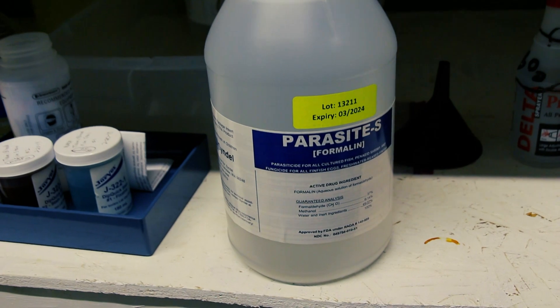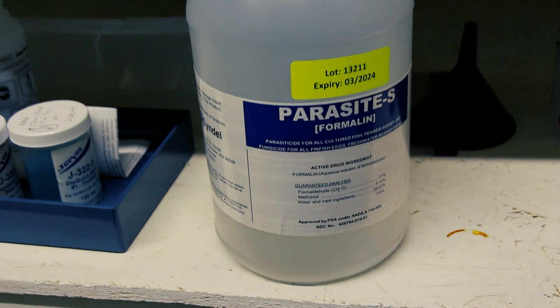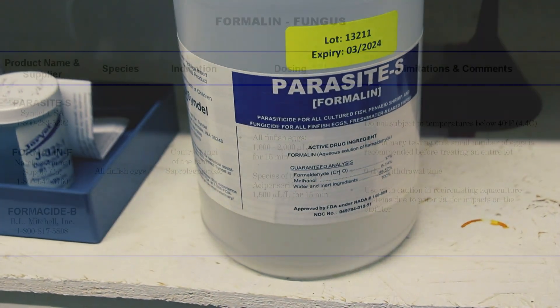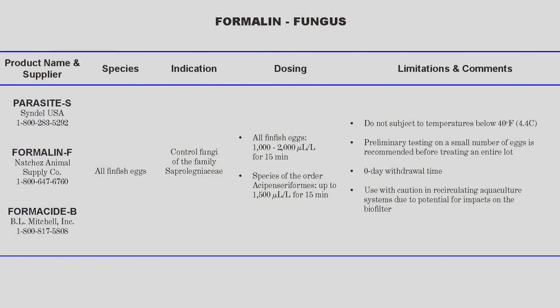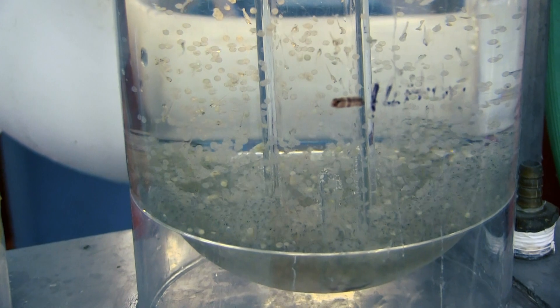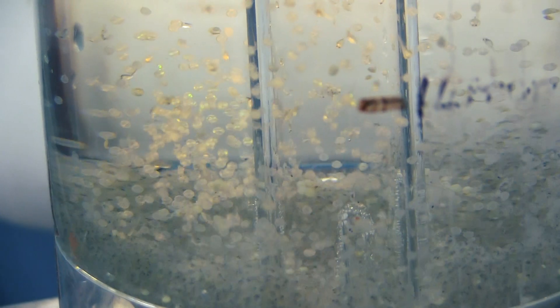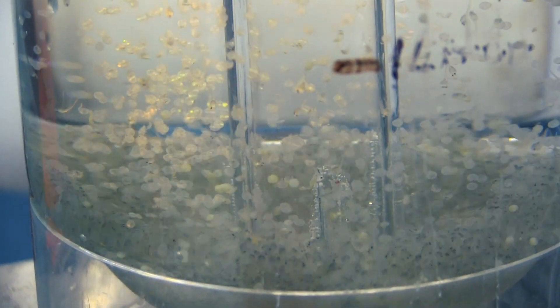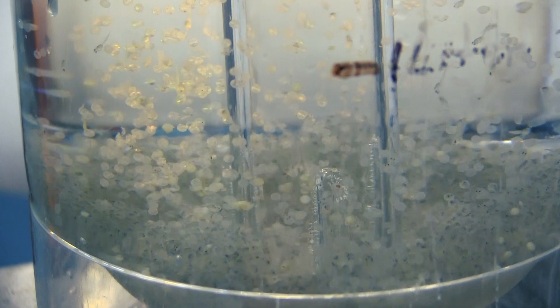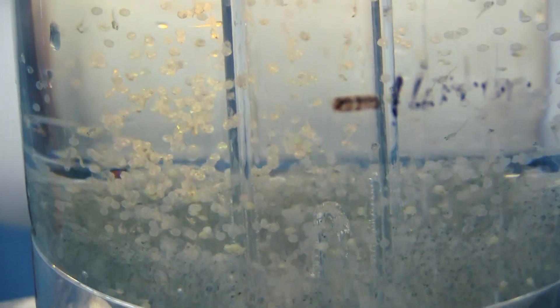In this example we are using formalin. The FDA approves a range of 1,000 to 2,000 microliters per liter formalin concentration for egg treatments. Formalin is toxic to fry, therefore it is critical that you do not treat if fry are present or if eggs are in an advanced stage of eye up.